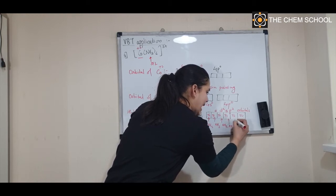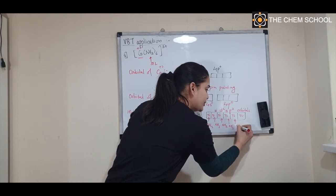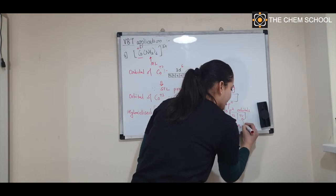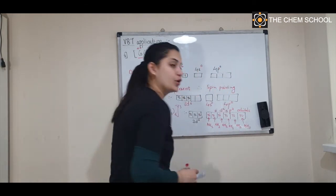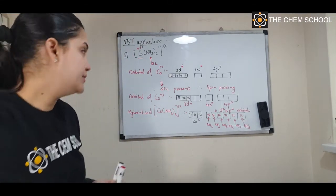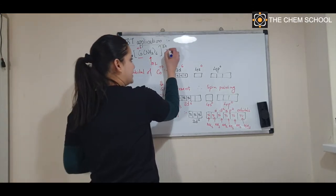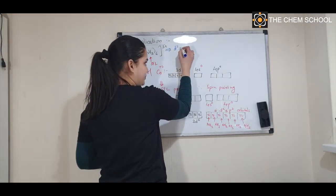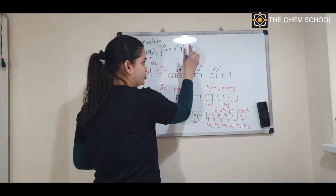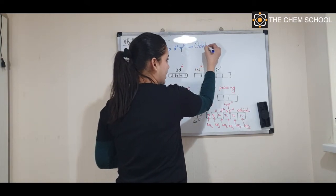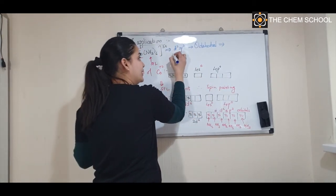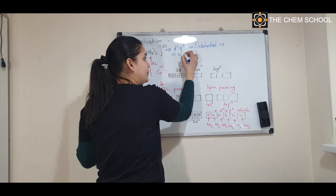Since the hybridization is d²sp³, the geometry of the complex is octahedral. The d used is 3d, while s is from 4s and p from 4p. Notice that the d orbital used is (n−1)d, where n = 4, since we are using 3d.